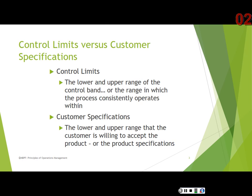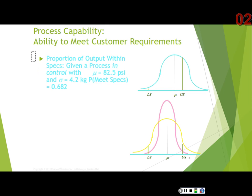Process capability is about the proportion of output that's within specs — what proportion actually meets what the customer wants. The specs provided by the customer in this example were 75 to 85 PSI. So 85 would be the upper specification limit and 75 would be the lower specification limit. We can see the actual mean of what we are able to do, and this could be a bit of a challenge for us.